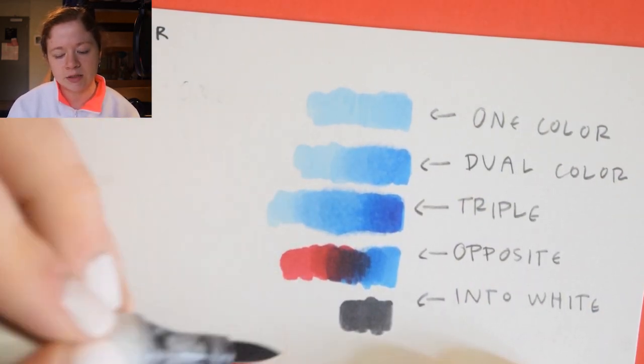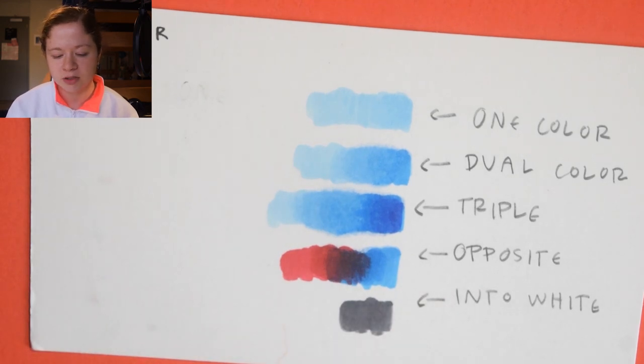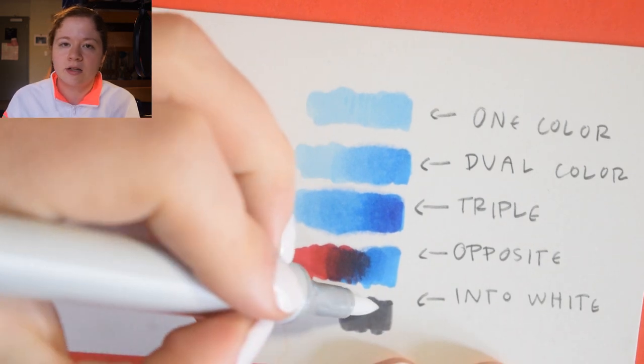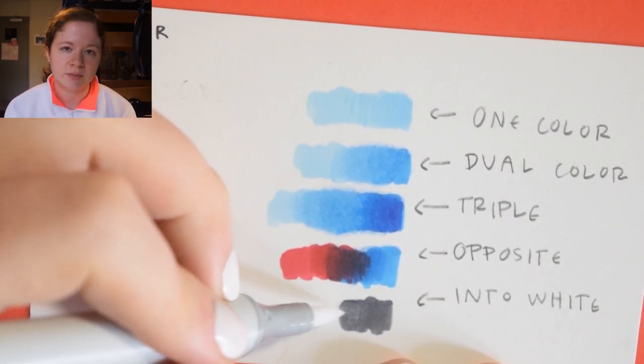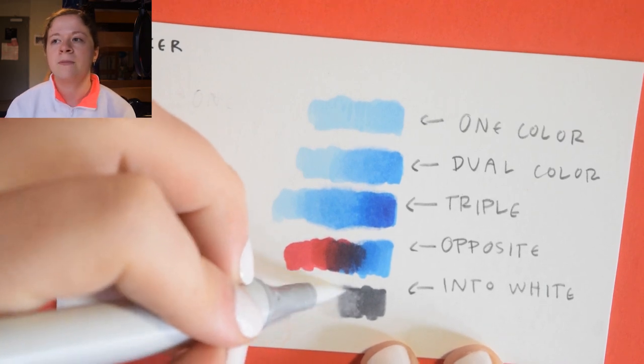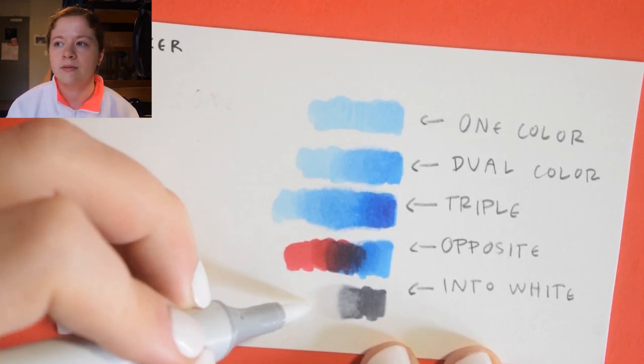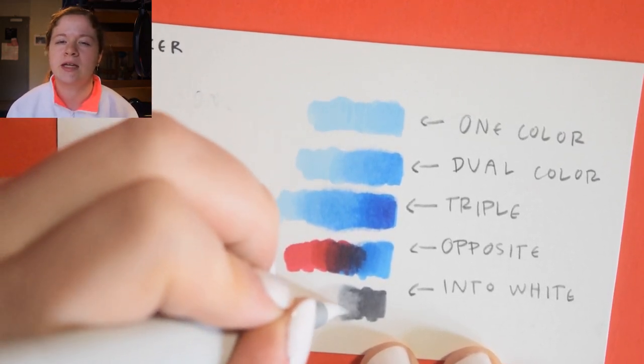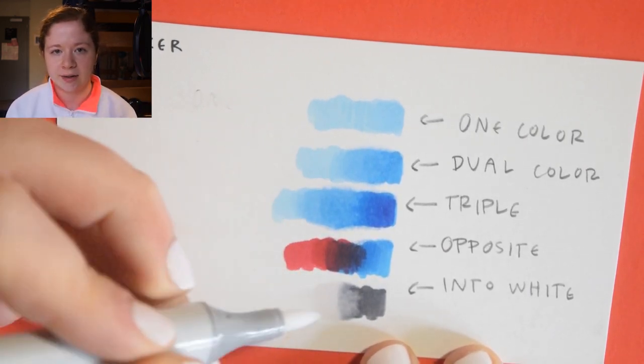And then if you're fading into white, this one is a little bit more difficult especially if you don't have a super light gray or any of the light colors. But you're going to need a colorless blender which you can get with almost any marker brand. So you put in your base coat, usually you want to go with a lighter color, and then take your colorless blender and blend that out.